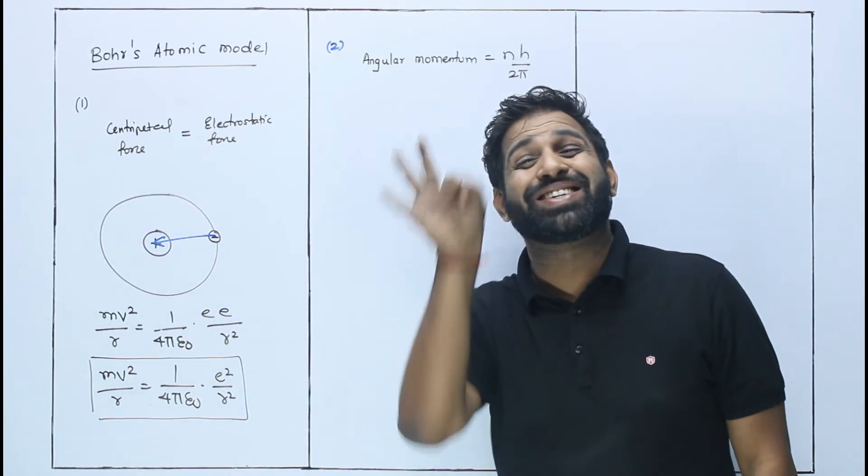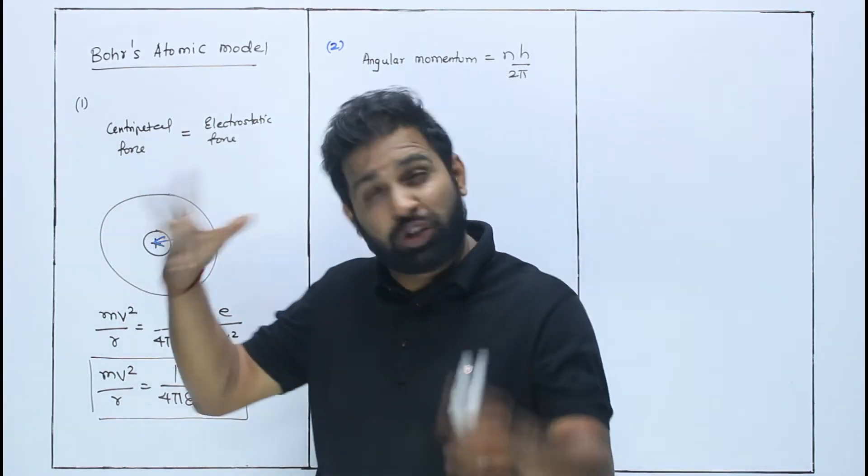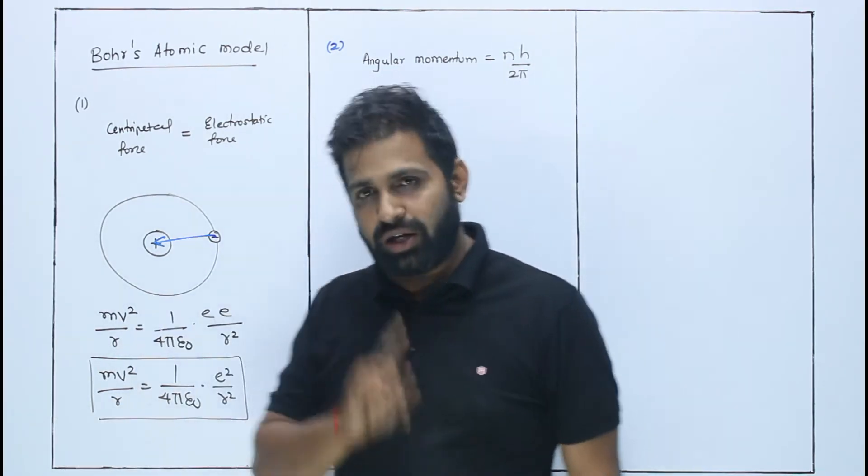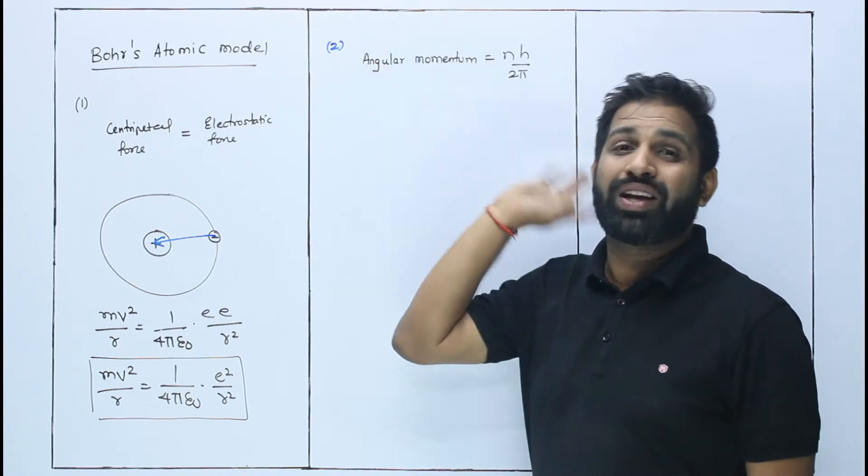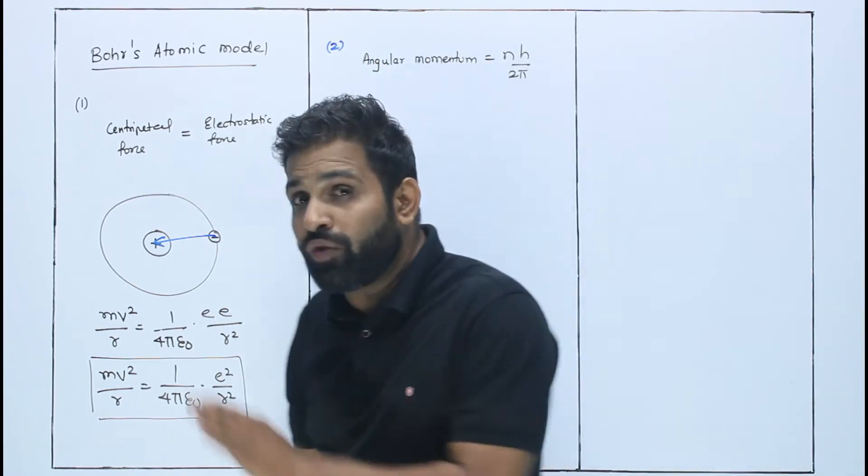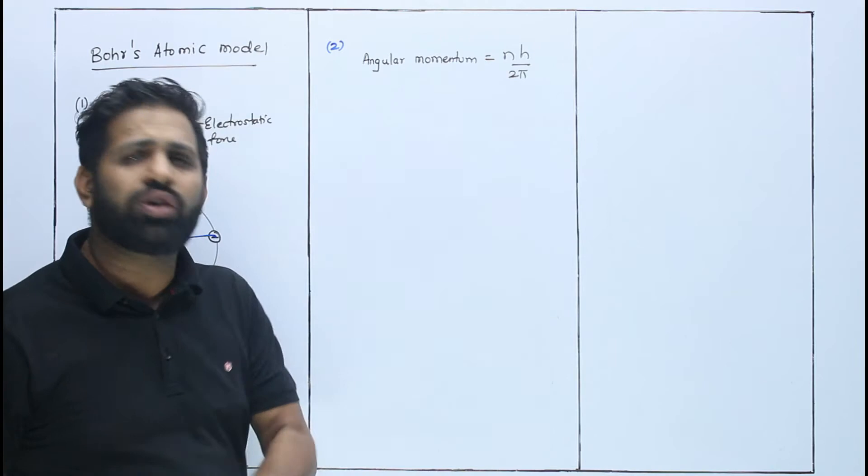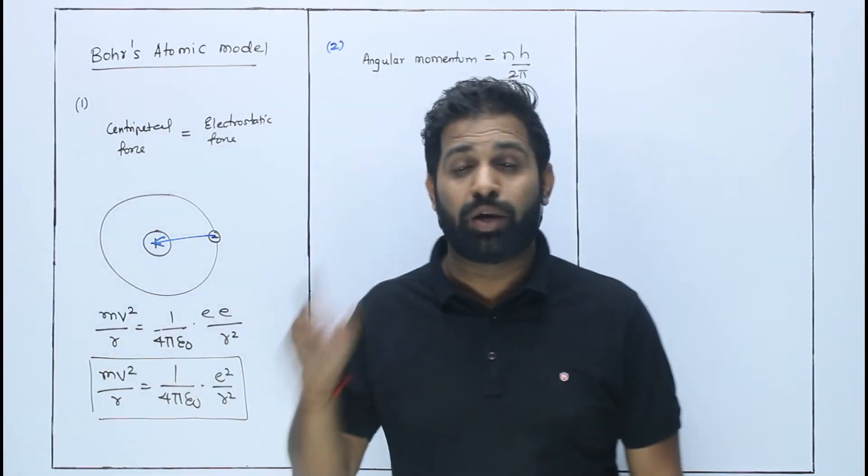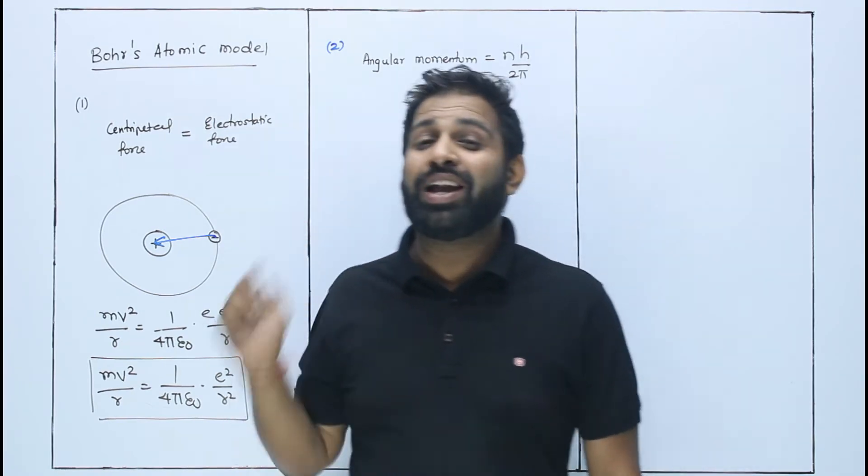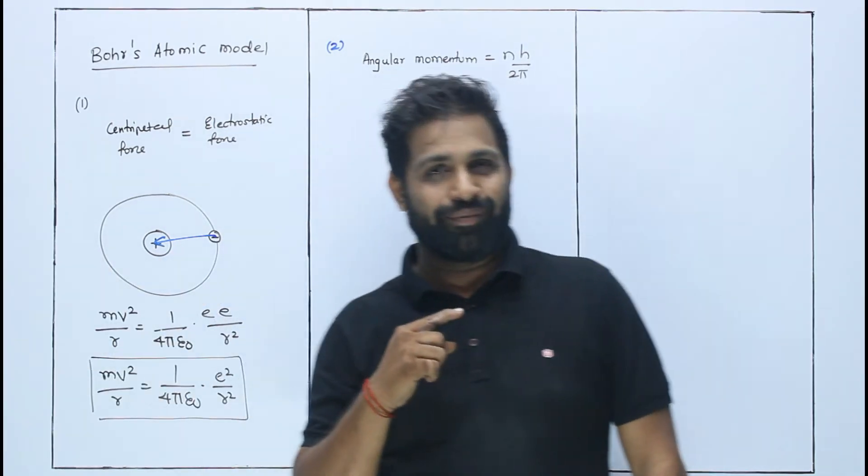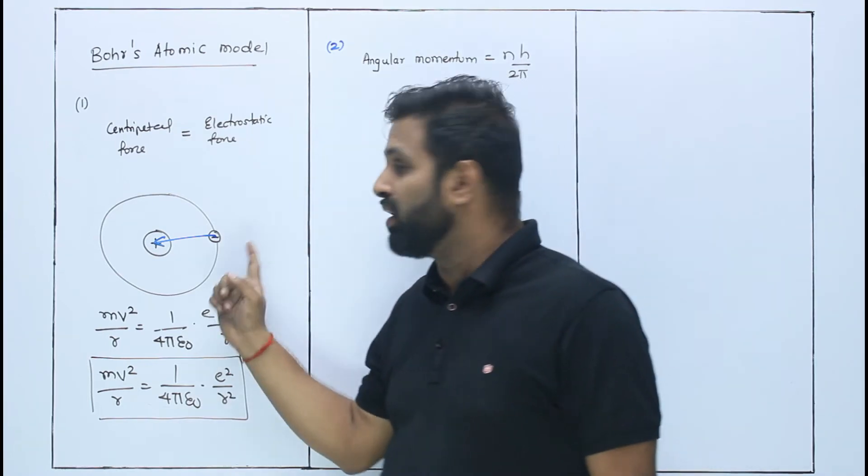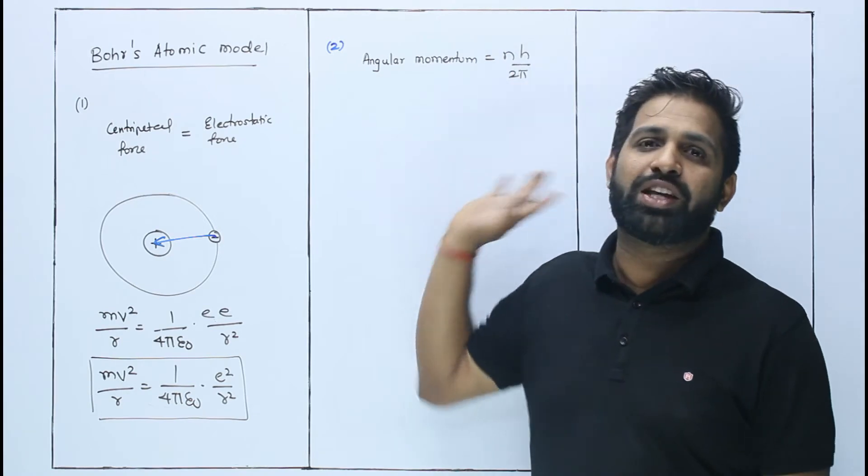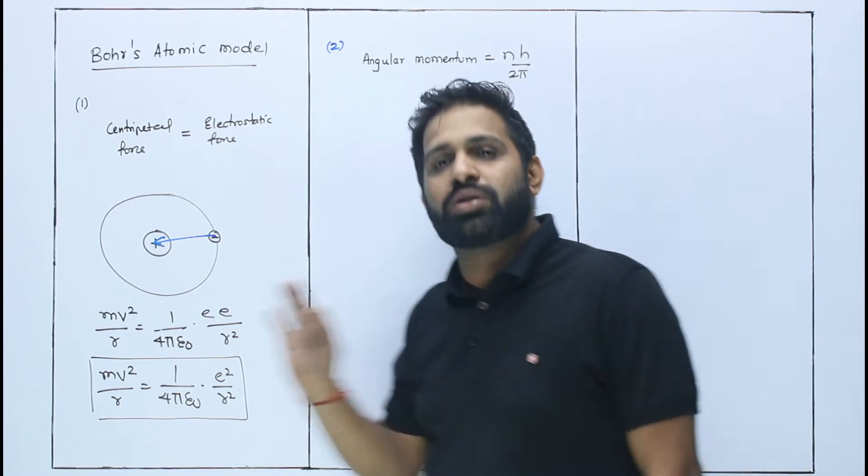In that orbit it will not emit energy because its condition is satisfied. Electron will not revolve in any orbit - electron won't revolve in just any orbit. Each electron has its own fixed orbit depending upon its speed. So when electron revolves around nucleus, its angular momentum will satisfy this condition: integral multiple of h / 2π. If not, it will satisfy this condition.